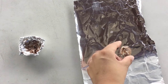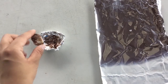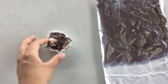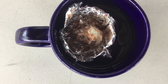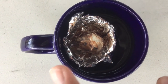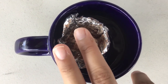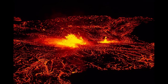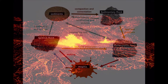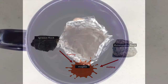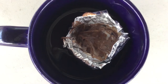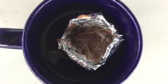Now we have our metamorphic rock. We are going to place our metamorphic rock back into our foil boat and place it back into our cup of hot water. And this time we are going to let our rock completely melt, because we are creating magma. Magma is molten rock that exists within and under the earth's crust. For magma to form, the rocks must be completely melted. It looks like our rock has completely melted.